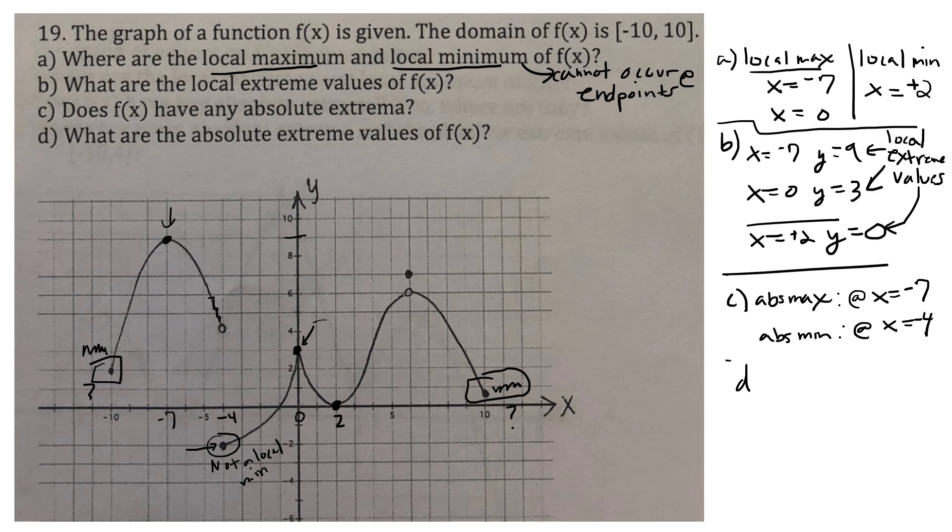In letter D, the question is basically, what are these values? And so, we have, when x equals negative 7, the y value is 9, and when x equals negative 4, the y value is negative 2. And these guys are the absolute extreme values. All right, that's it for that question.